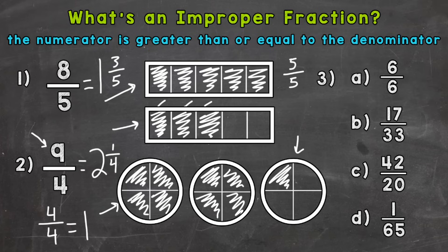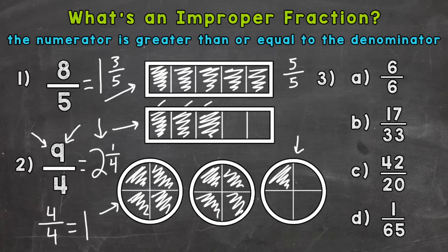So 9 fourths equals 2 and 1 fourth. I want to mention that this is an improper fraction. Now where we have a whole number and a fraction, that's called a mixed number. Improper fractions and mixed numbers are equivalent — one is just in complete fractional form, and the other shows the whole number plus the fractional form. But 9 fourths and 2 and 1 fourth are equivalent, just like 8 fifths and 1 and 3 fifths are equivalent. So as far as number 2, we proved that 9 fourths is greater than a whole, and again we had an improper fraction because the numerator was greater than the denominator.